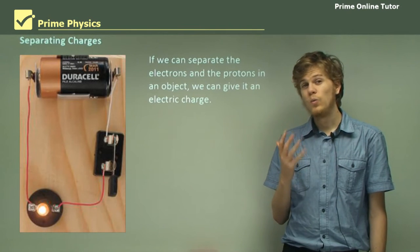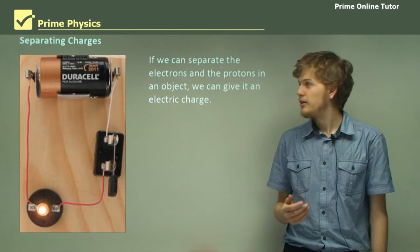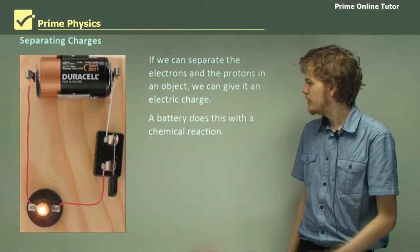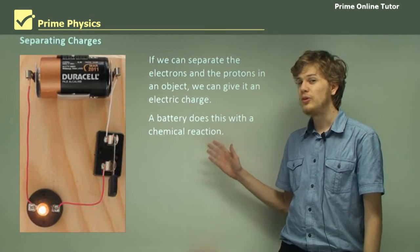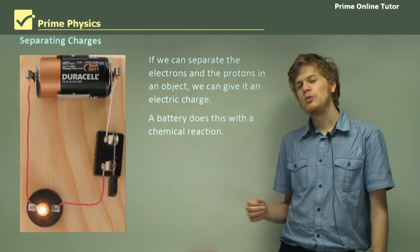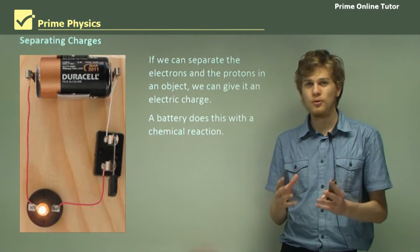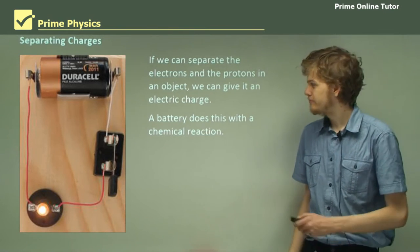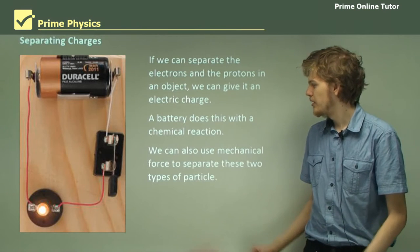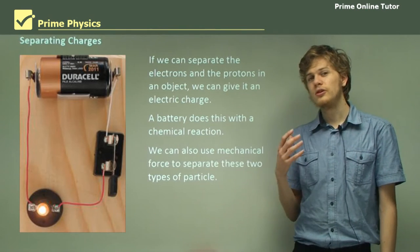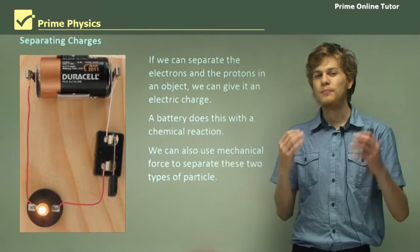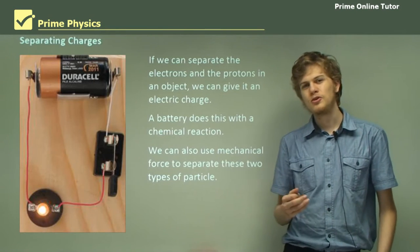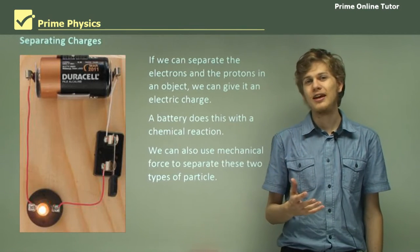One object that's able to do this continuously is a battery. A battery uses a chemical reaction in order to separate the electrons and the protons in a set of atoms. It turns out that we can also use mechanical force in order to separate protons from electrons, and this is the reason it's possible to give yourself a static shock.